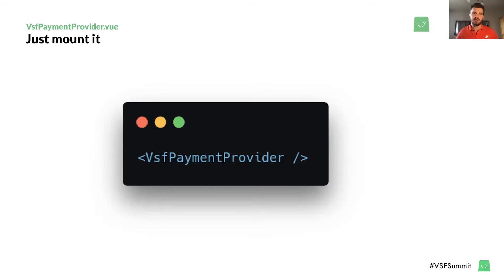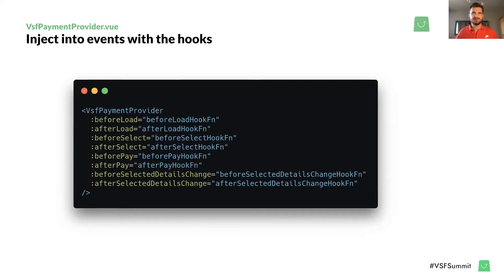You might still wonder: what if you need some kind of impact on what's happening internally? Let's move to the part about extensibility. You can pass asynchronous functions to the VSF payment provider component to hook into different events within its lifecycle, override initial function parameters, or just react to specific events like method selection, before load, or after load. However, as every payment provider is very different, not every hook is present in every integration — you should always refer to the documentation of the specific provider to learn which hooks are available and when they are called.